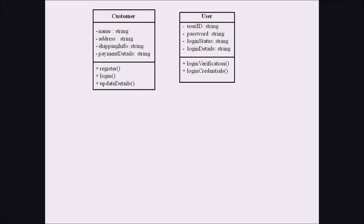Next we are dealing with the relationship. The Customer is related to the User with the relationship of inheritance — the Customer inherits the data of the User. The private attributes like user ID, password, login status, and login details are all inherited by the Customer. The methods like login verification and login credentials are also inherited by the Customer from the User class. So the User is the parent class and the Customer is the child class.